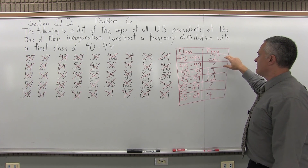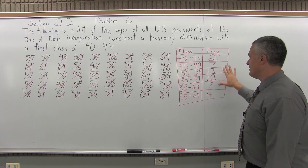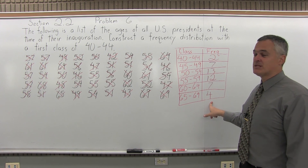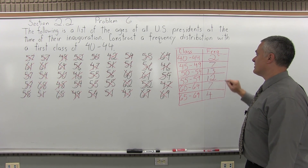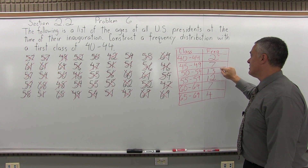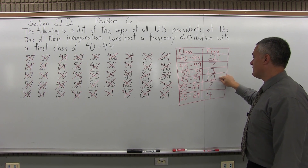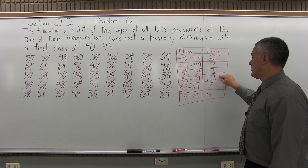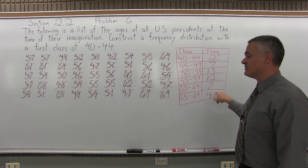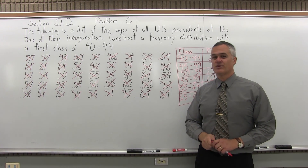However you come up with 45, a nice thing to do is see that your frequencies add up to 45. It's not a guarantee, but if it adds up to 44 or 46, you made a mistake. Two plus seven is nine; nine plus 13 is 22; 22 and 12 is 34; 34 plus seven is 41; and 41 plus four more is 45. That's the frequency distribution for the ages of the presidents when they were inaugurated. Thank you.